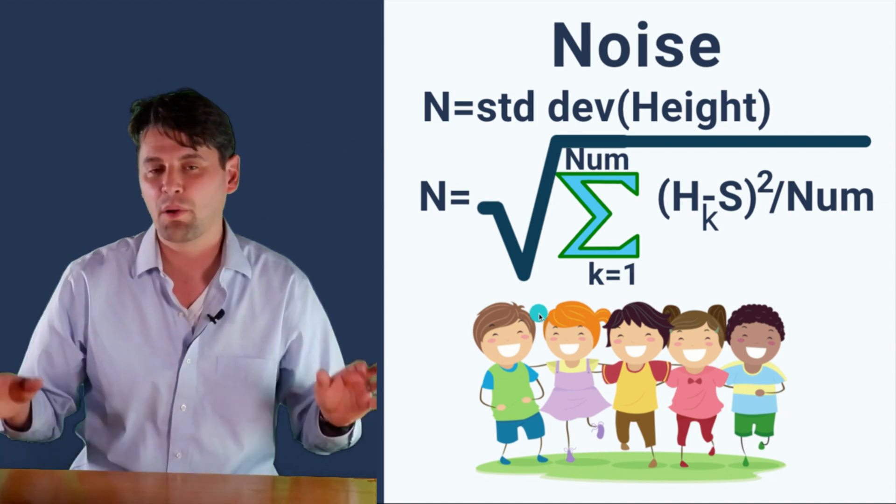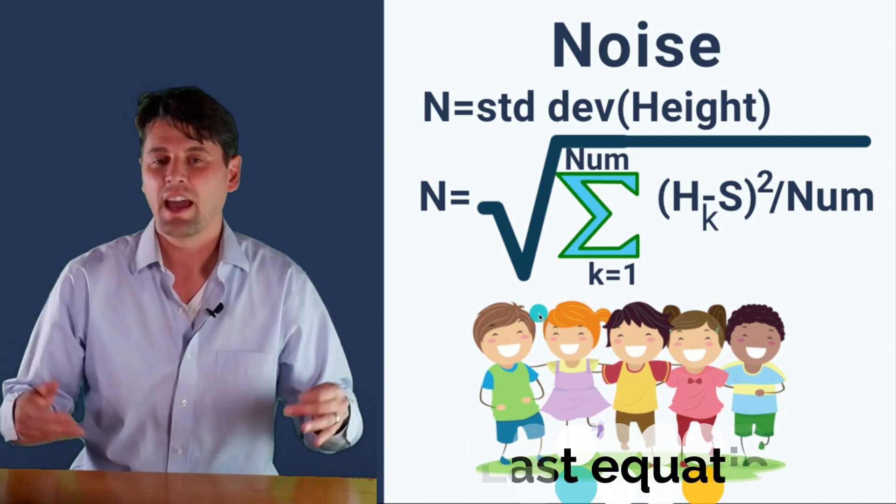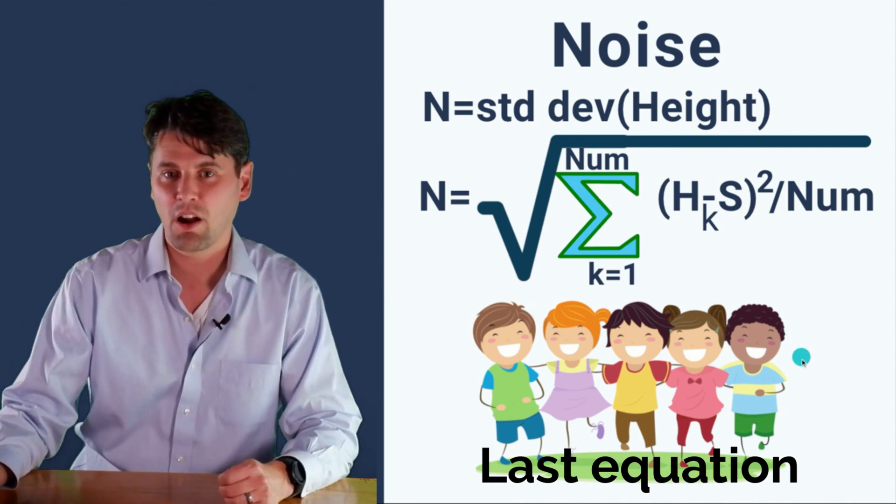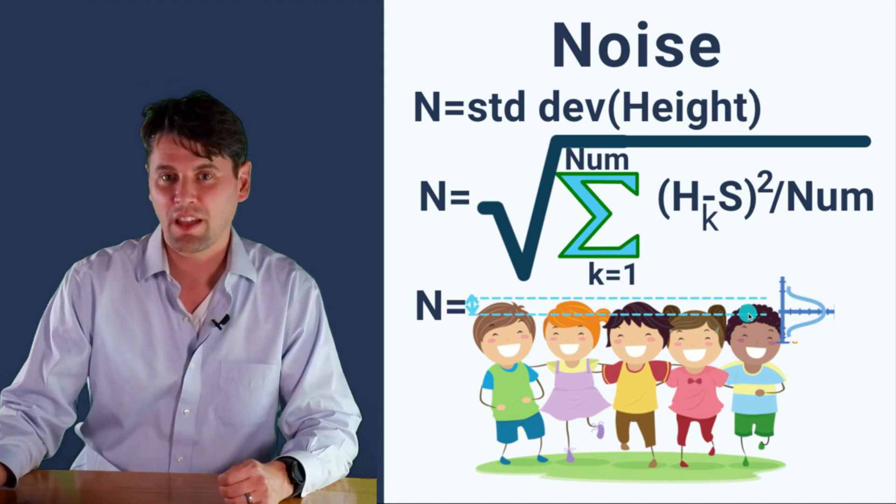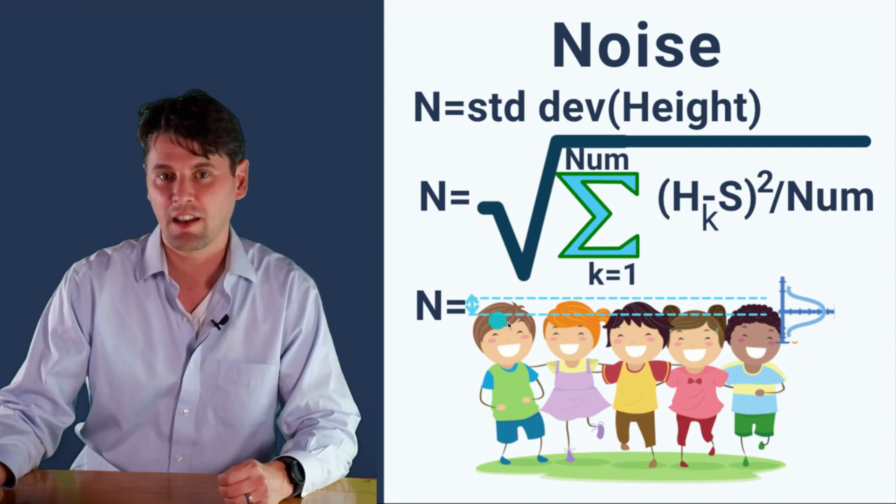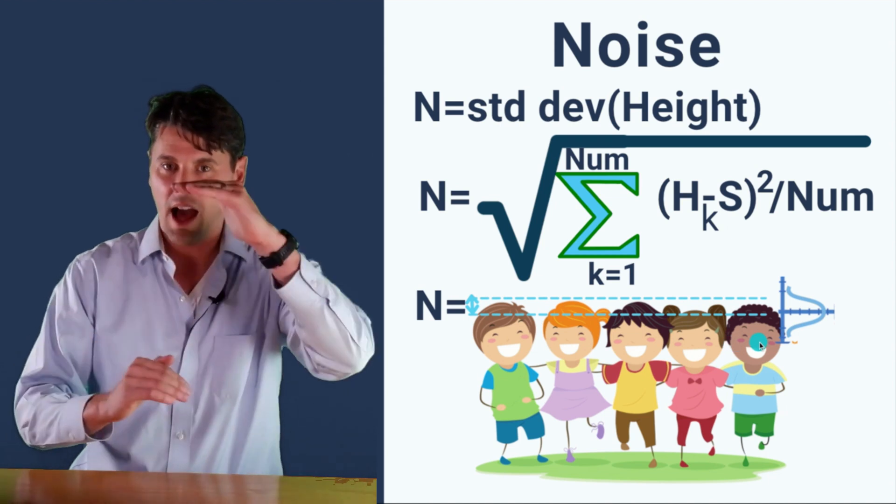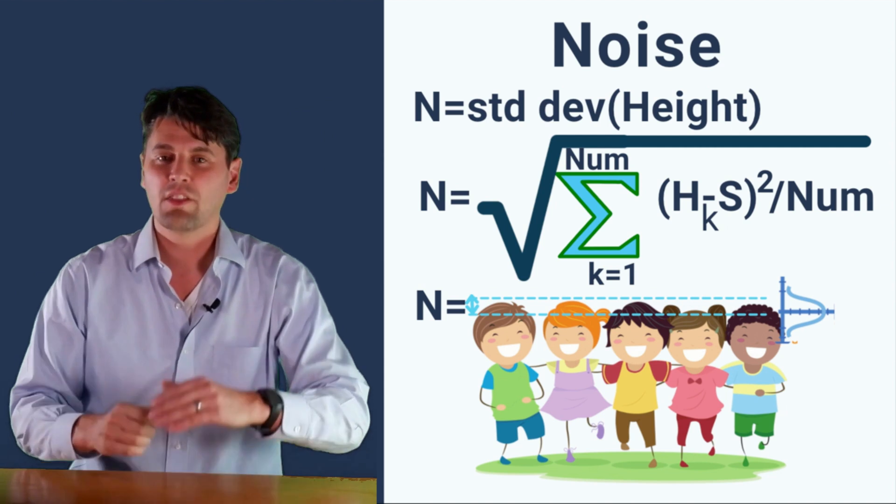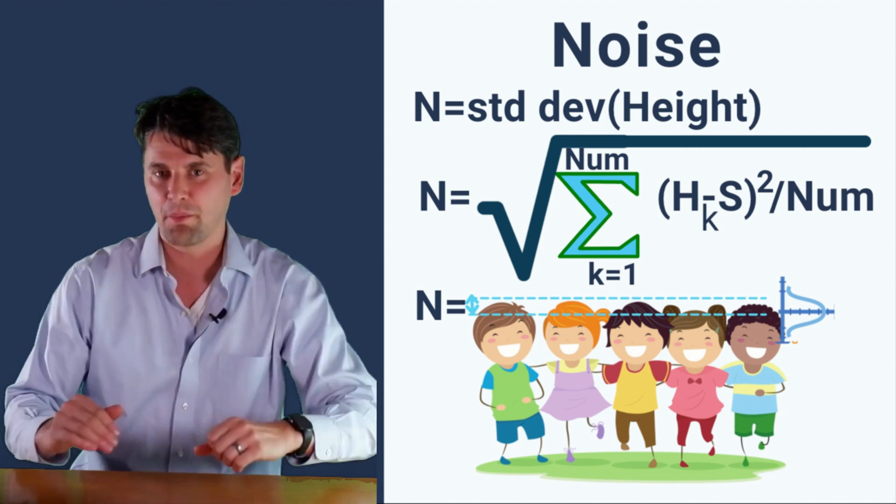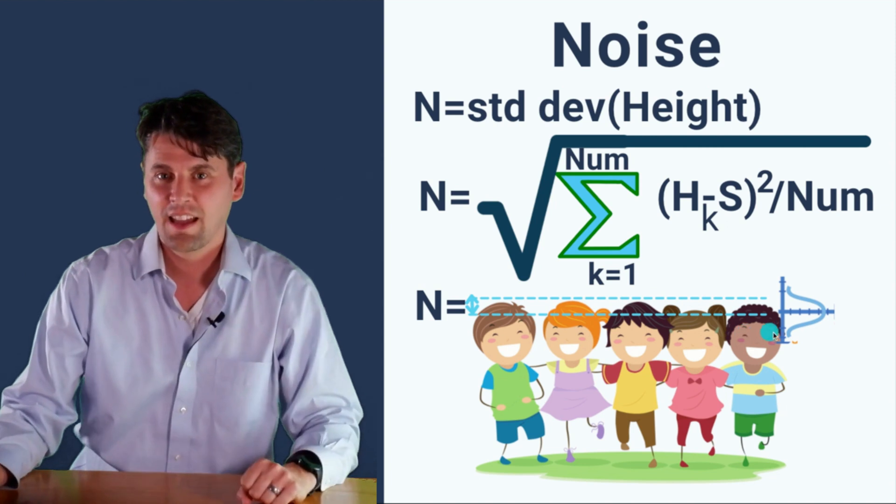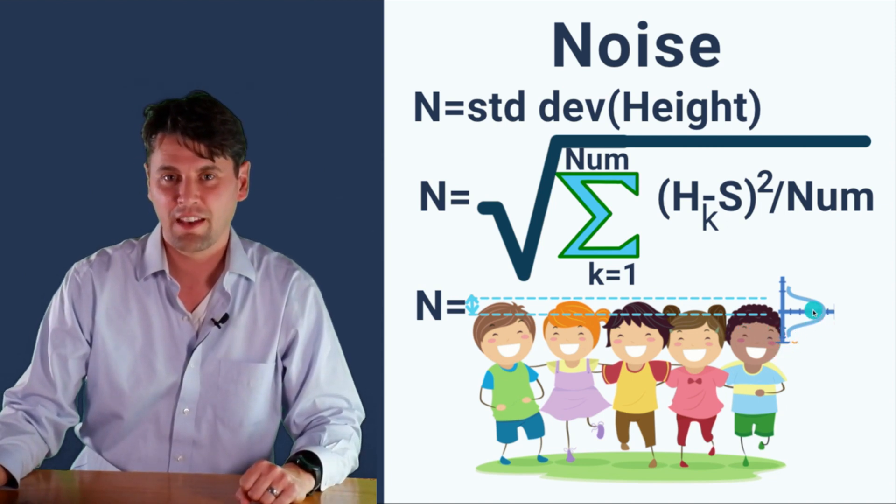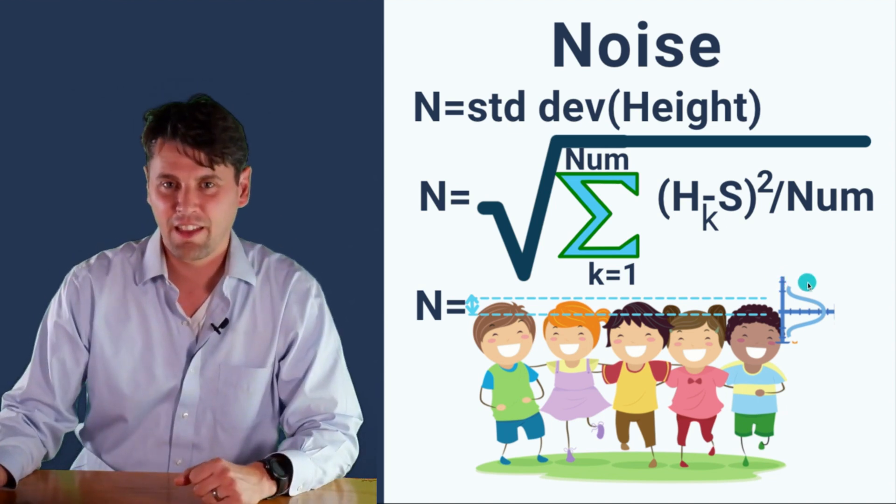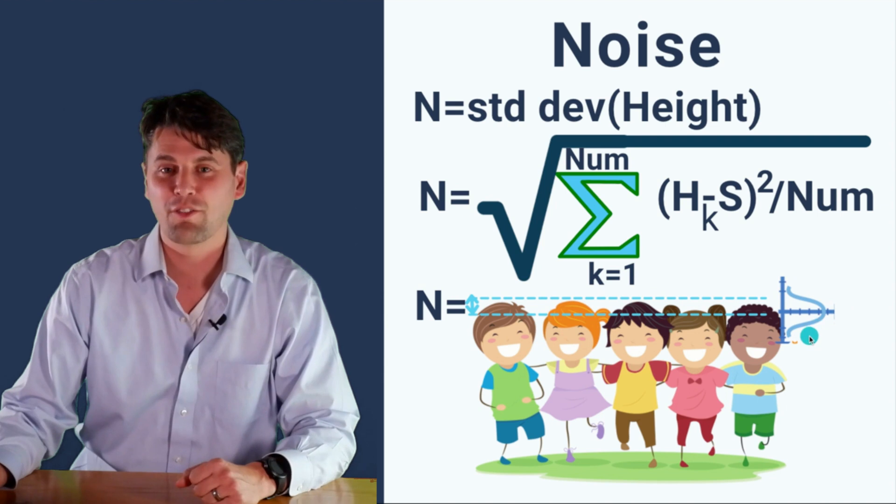And then we go through, we add all those up, and we divide by how many we had. And then because we squared them at the beginning, we're going to take the square root, and that's what we call the standard deviation. So you can think about there's a line here and a line here that are a little bit higher and a little bit lower than the mean signal. And those lines mean about two-thirds of the population is going to be within those two lines, and there's going to be kind of this curve that describes the children that are very tall or very short. And they will follow this kind of normal distribution.